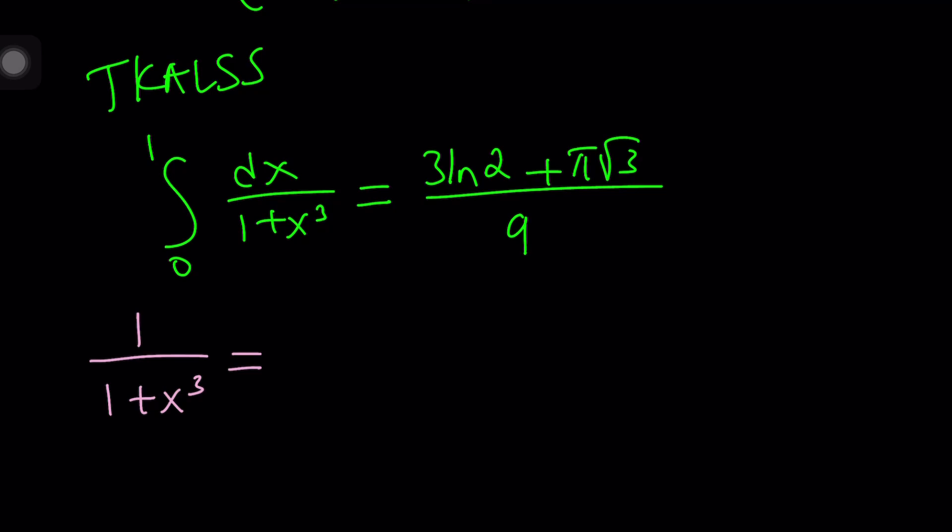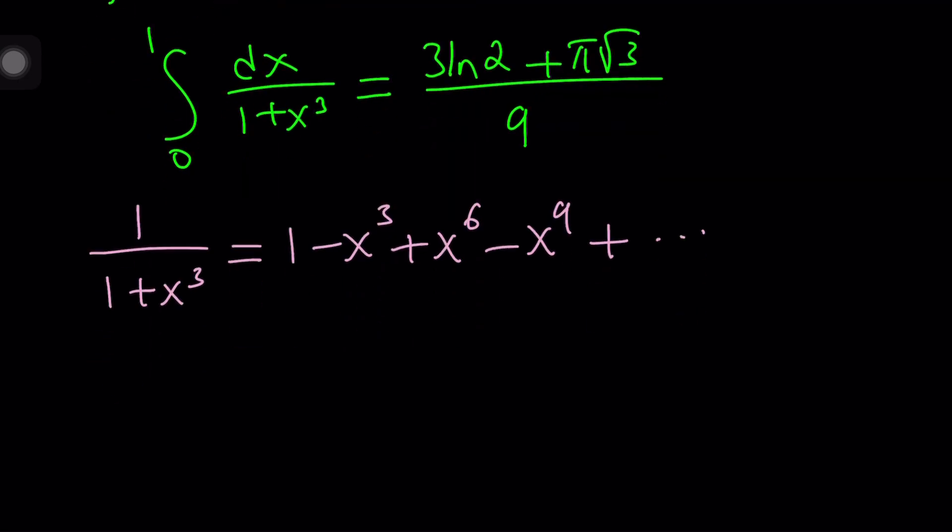Now, if you start with 1 over 1 plus x cubed, we kind of separated into two fractions and integrated it. I've done all the work for you. But we can also look at this problem a little differently using an infinite geometric series. And by the way, when you set your limits of integration from 0 to 1, you're basically assuming that the variable is going to stay between those values, which means our infinite geometric series is going to converge for sure.